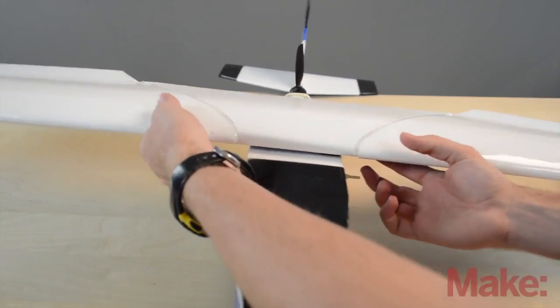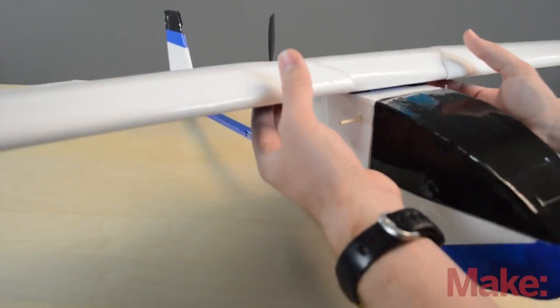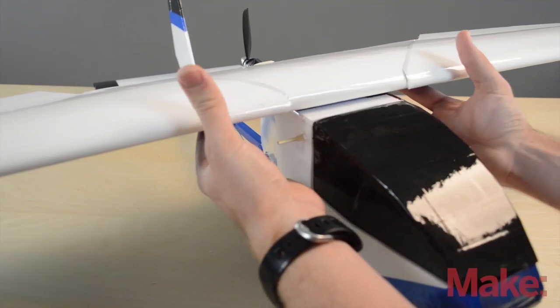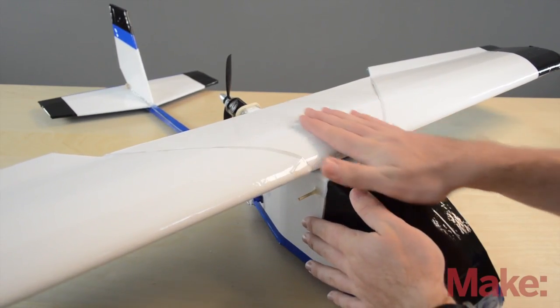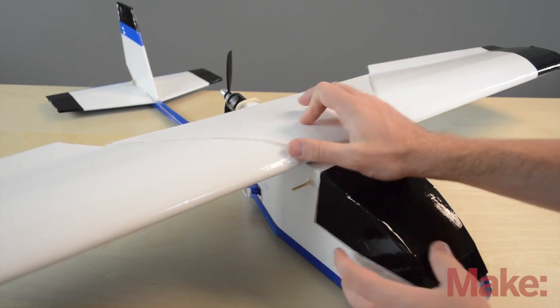So the CG is where the plane balances. Now I could give you fancy measurements on where you put your fingers to make it balanced such like that. But every plane is going to be different, and depending where you put your wing, that's also going to change your CG.